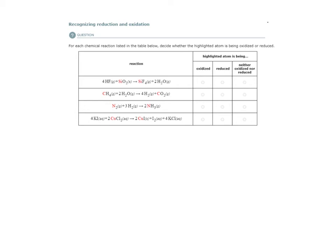In this case we're supposed to decide whether the highlighted atom is being oxidized or reduced. This is one way that chemists use oxidation number. It helps us to determine whether or not we have a redox reaction or an oxidation reduction reaction, which is what redox is short for.